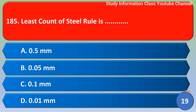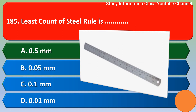Next question: the least count of a steel rule is option A 0.5 millimeter, option B 0.05 millimeter, option C 0.1 millimeter, option D 0.01 millimeter. The correct answer is option A: 0.5 millimeter.